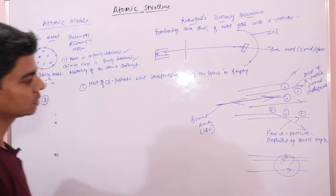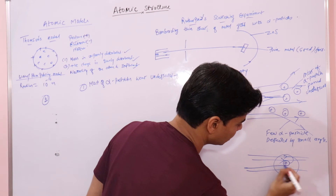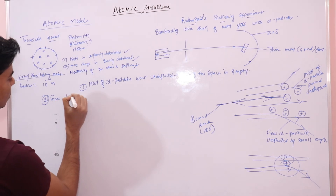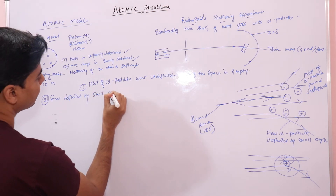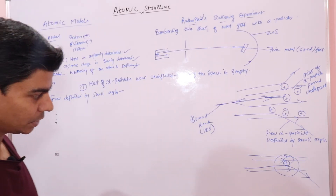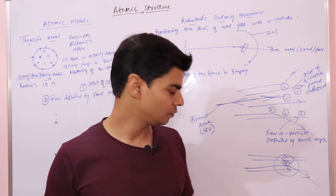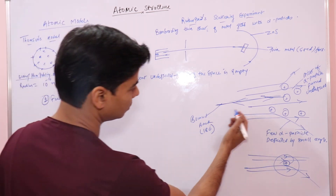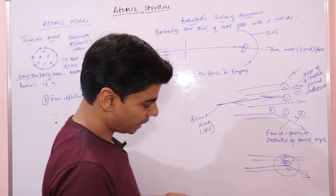The second observation: few alpha particles were deflected by small angles. What could be the reason for this deflection? The cause of deflection and the bounce-back at 180 degrees must be explained. We know that alpha particles are positively charged.